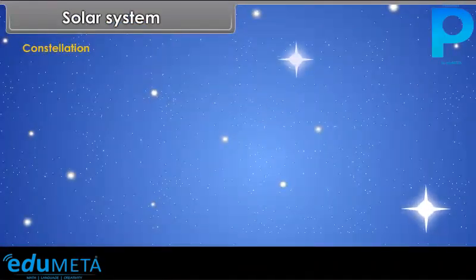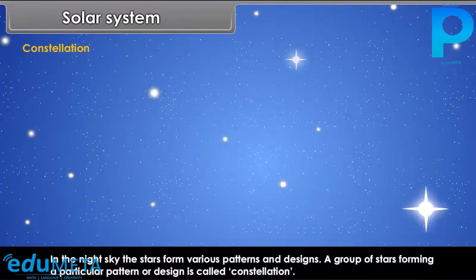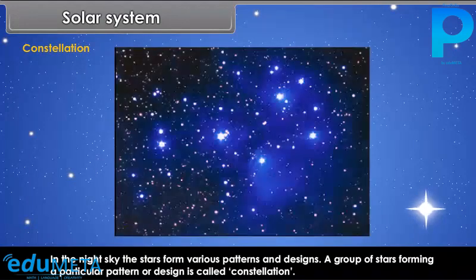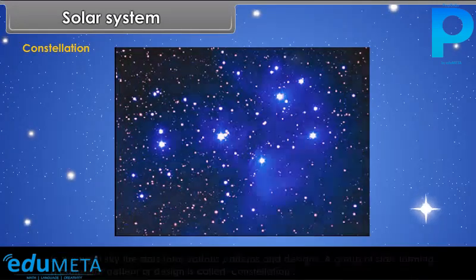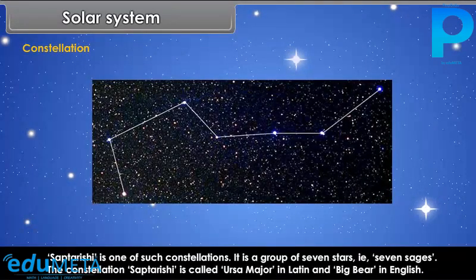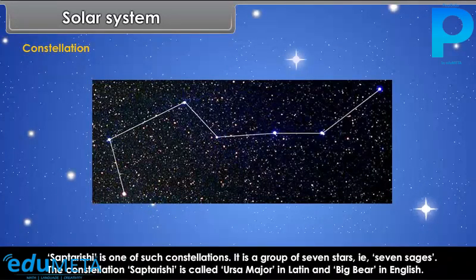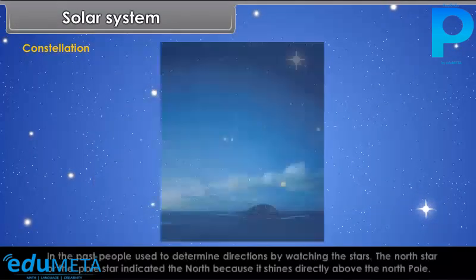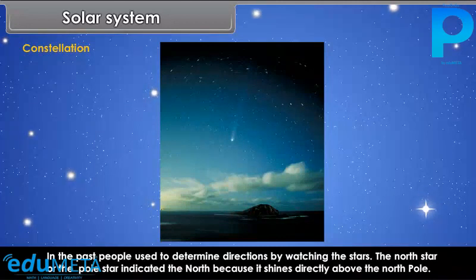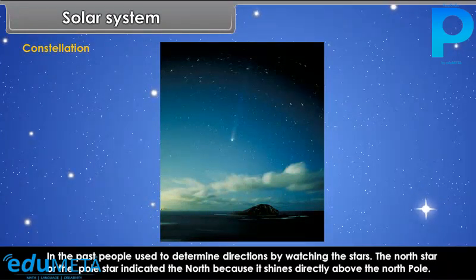In the night sky, the stars form various patterns and designs. A group of stars forming a particular pattern or design is called a constellation. Saptarashi is one of such constellations. It is a group of seven stars, meaning seven sages. The constellation Saptarashi is called Ursa Major in Latin and Big Bear in English. In the past, people used to determine directions by watching the stars. The North Star or the Pole Star indicated the North because it shines directly above the North Pole.